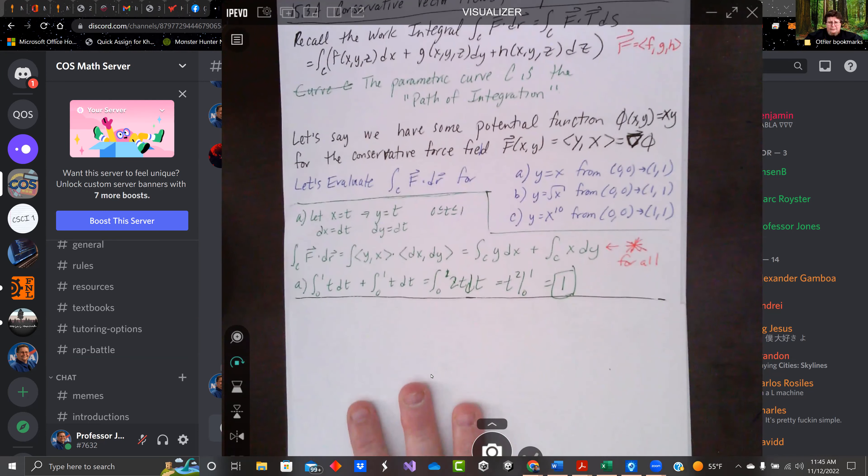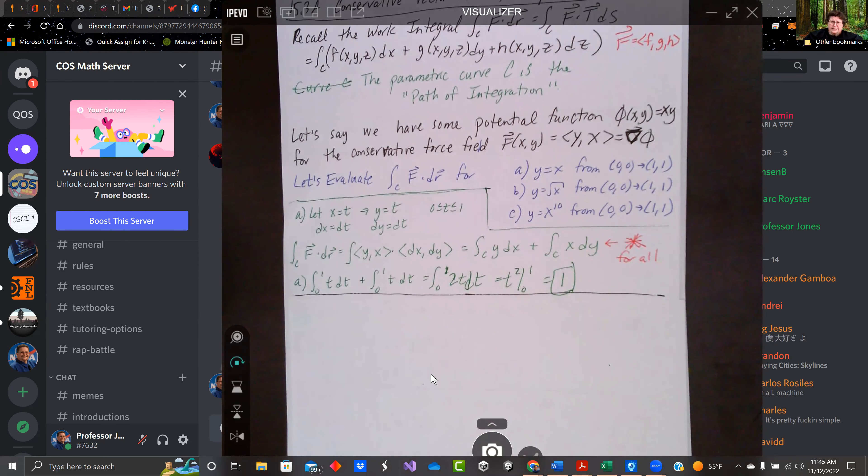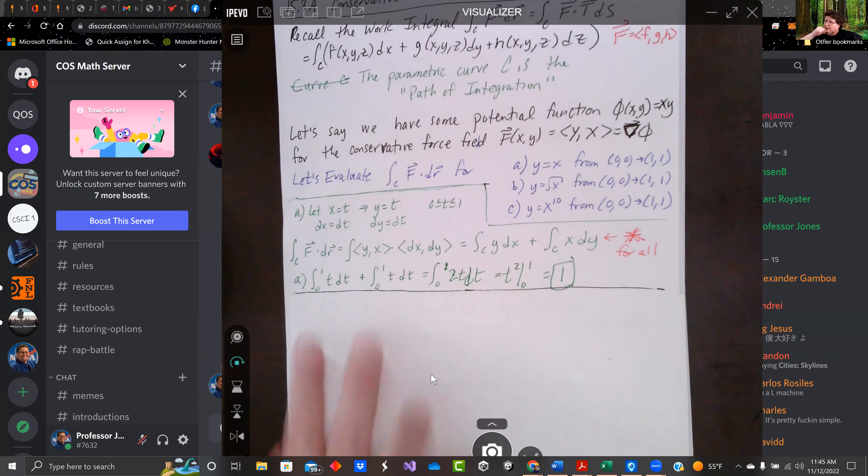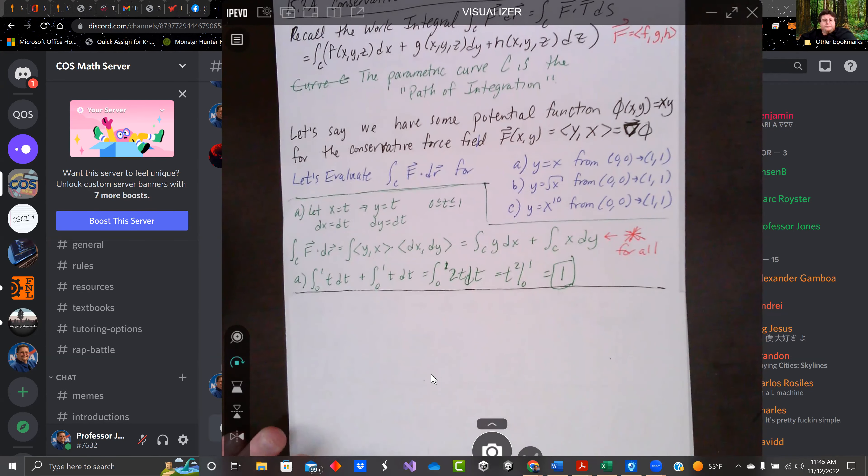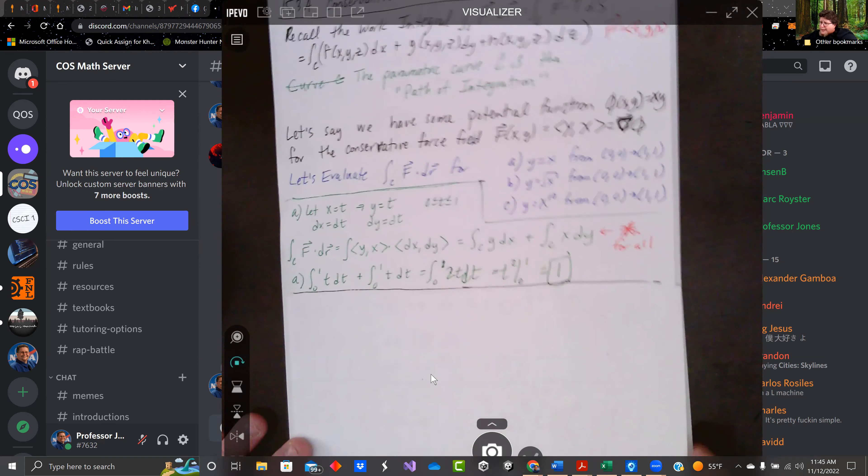So for part a, we plug it in. I plug in y equals t and dx equals 1, x equals t and dy equals 1, 0 to 1 on both integrals. We could have written them as one integral, but I like to separate them. I did end up putting it back together. 0 to 1 of 2t dt. We get t squared and evaluating, we get one.